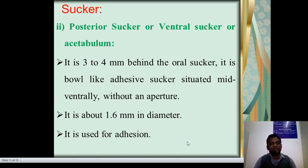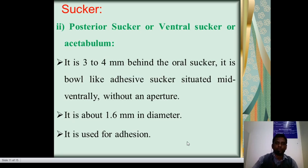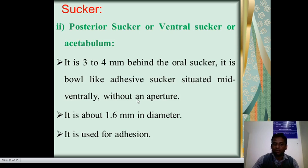The next is the posterior sucker, also called the ventral sucker or acetabulum. It is situated 3 to 4 mm behind the oral sucker. It has a bowl-like adhesive function, situated mid-ventrally without an aperture. It is about 1.6 mm in diameter and is used for adhesion.